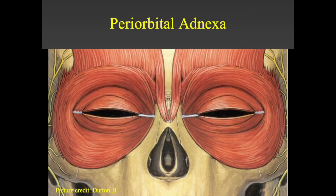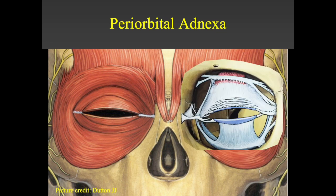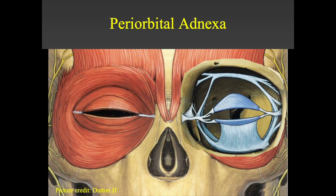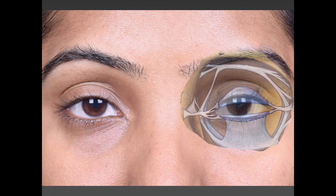All this bony anatomy is covered by soft tissue layers: skin, followed by a sheet of orbicularis, below which is the orbital septum, which protects the internal structures such as the levator, all the ligaments, and the tarsus. These structures need to be kept in mind and protected when approaching the bony anatomy, whether for fracture repair or tumor removal.